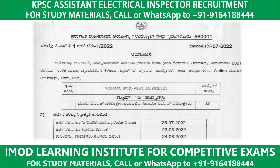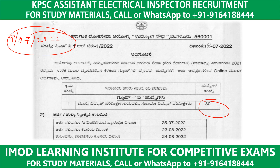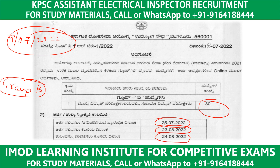The detailed notification date is 19-7-2022 for 30 posts of Assistant Electrical Inspector Group B. The application time limit starts from 25th July 2022. The last date to submit the application is 23rd August, and the last date for payment is August 24th.